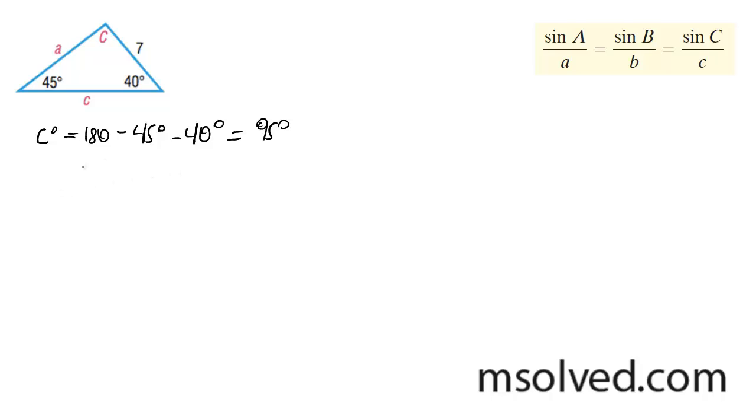So what I'm going to do next is I'm going to find side A. So I'm going to do sine of 40 over A is equal to sine of 45 degrees over 7, cross multiply,